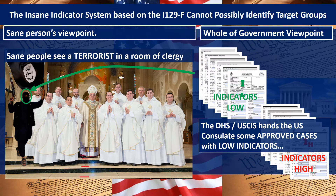Criminals know how to avoid indicators. Meanwhile, Americans who go overseas — studying abroad, doing graduate school, vacationing — meet someone in a museum and fall in love. People in legitimate relationships don't think, 'we can't date because you're more than two years older than me.' American citizen petitioners don't think like that.